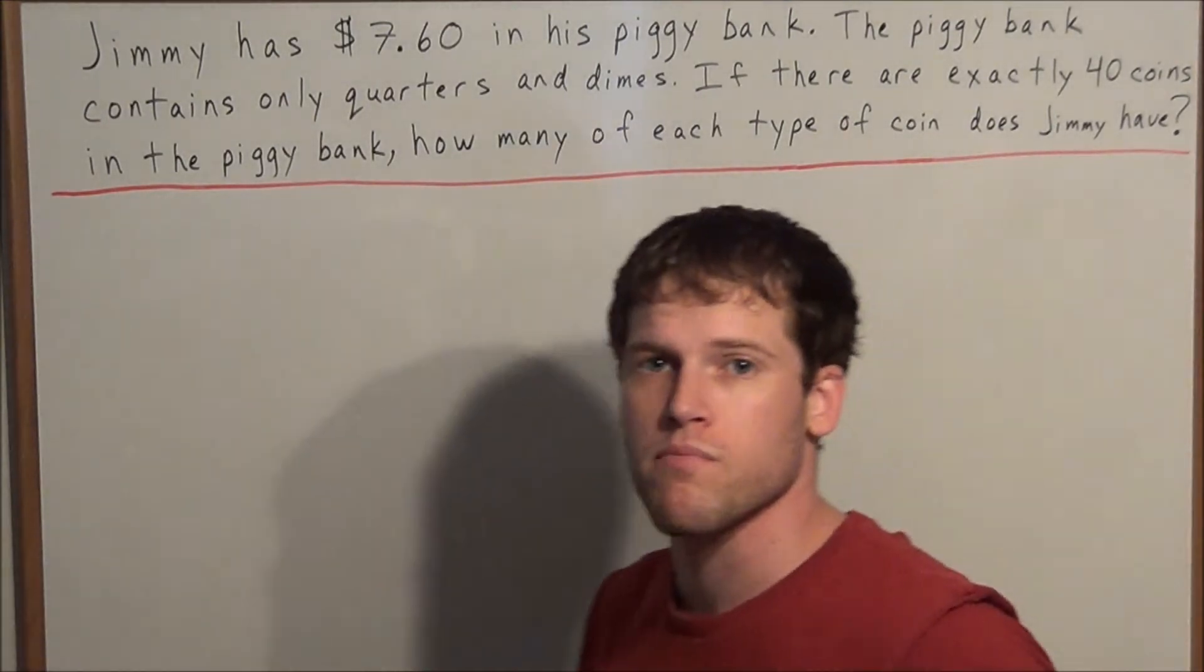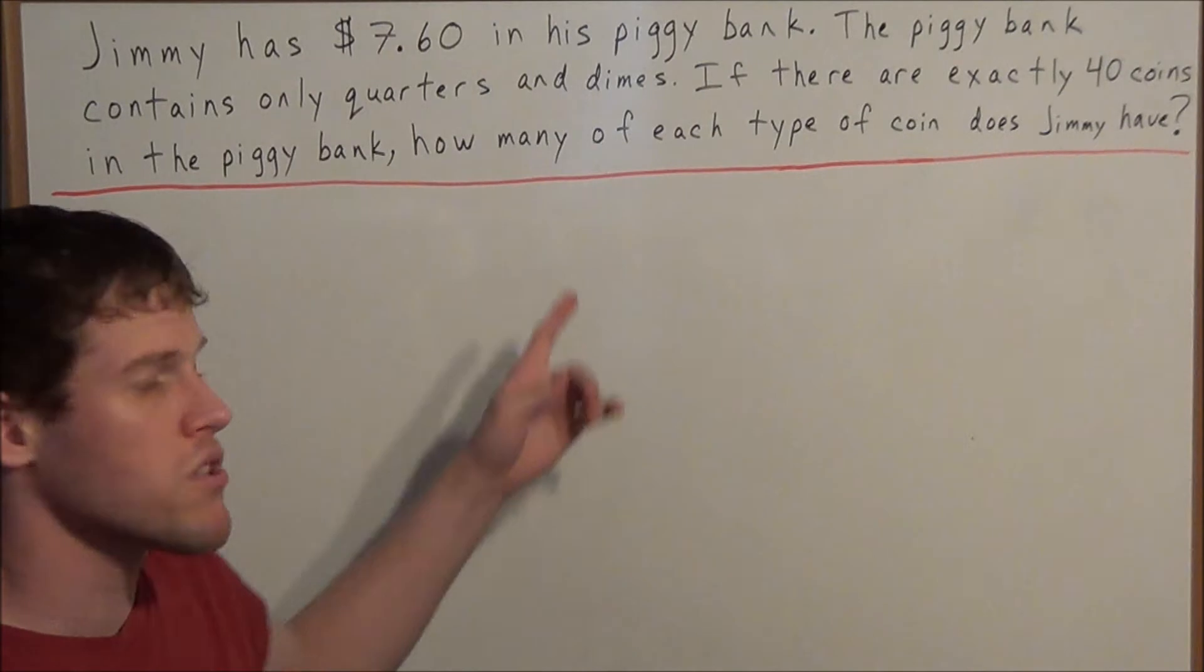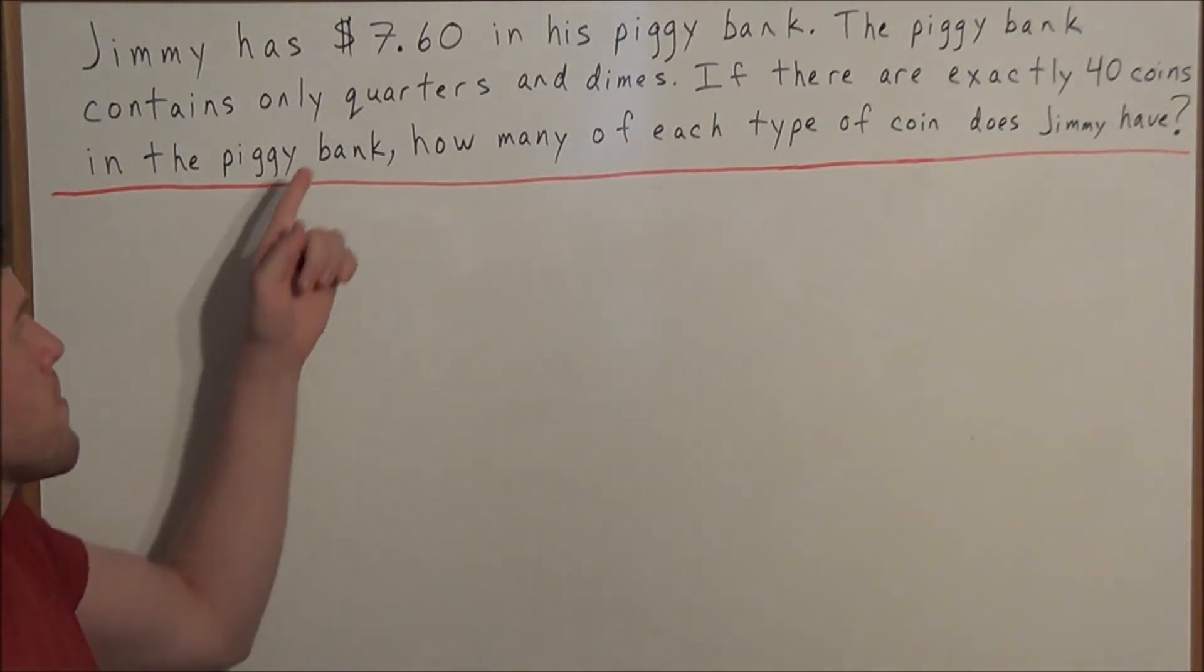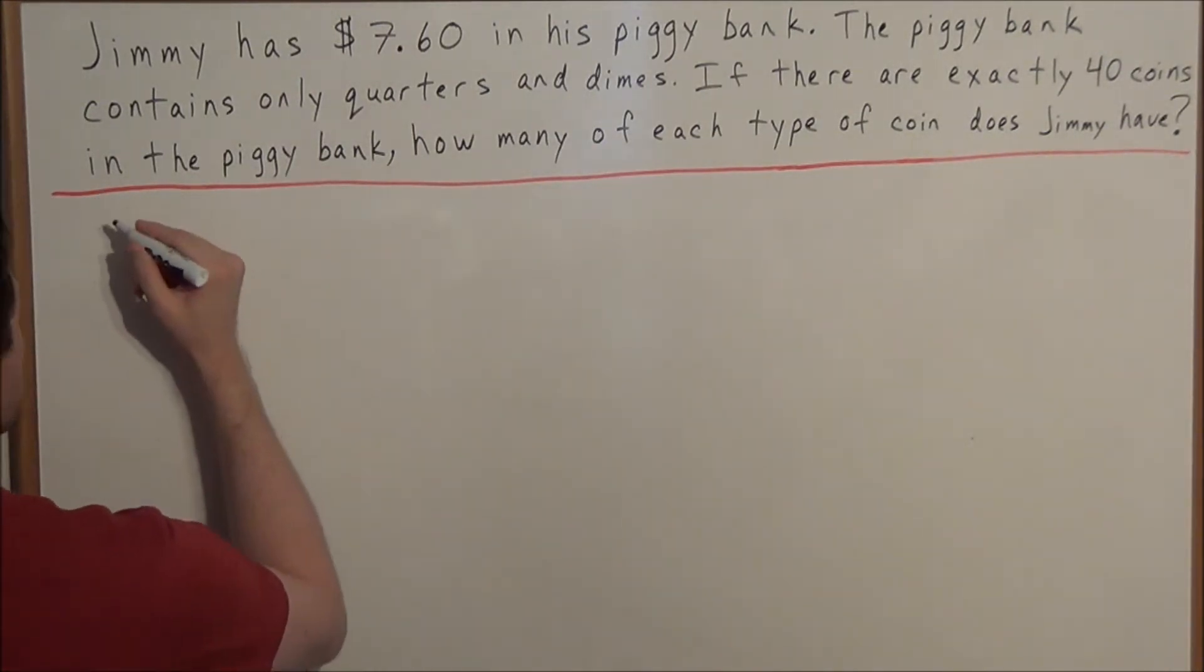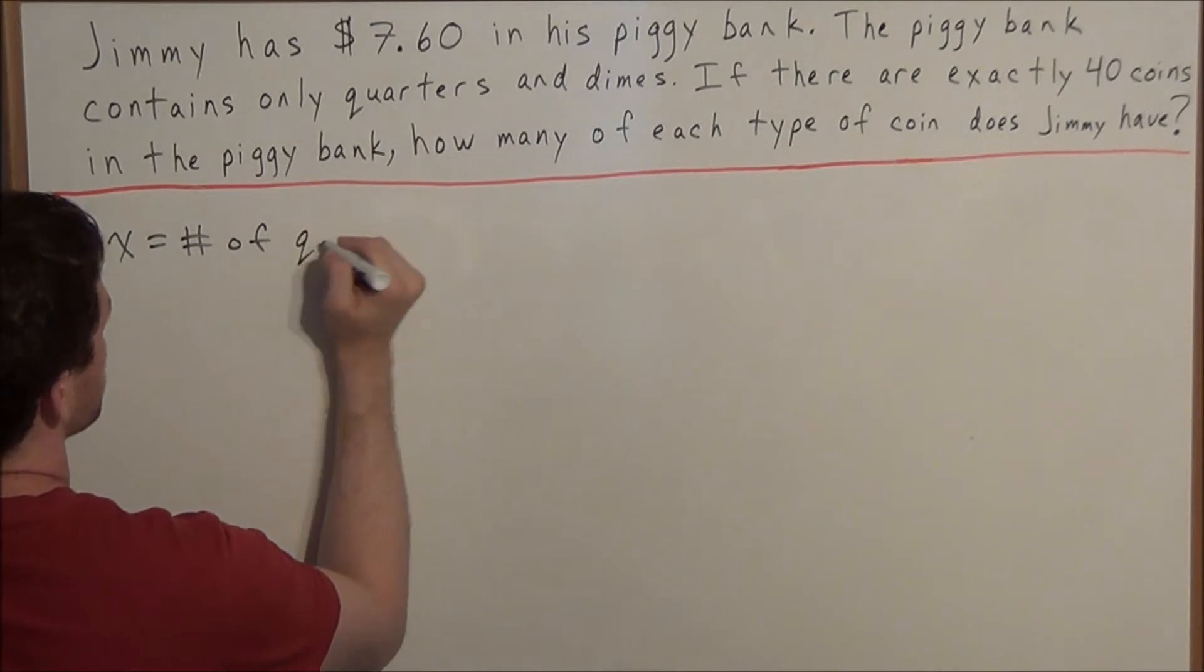What we want to do with this problem is set up some algebraic equations to express what's going on. For instance, we know that the piggy bank contains only quarters and dimes, so we can let x equal the number of quarters.